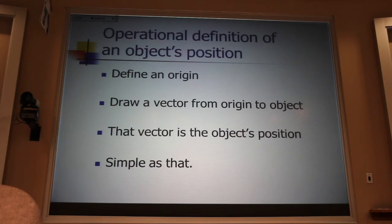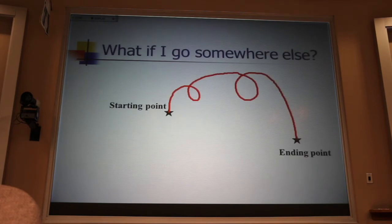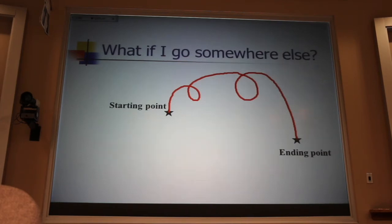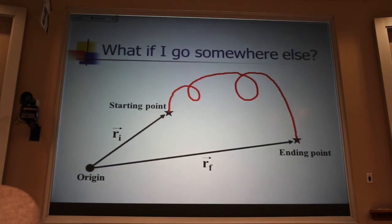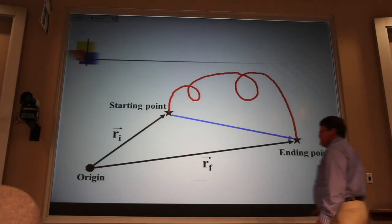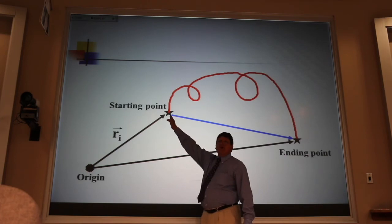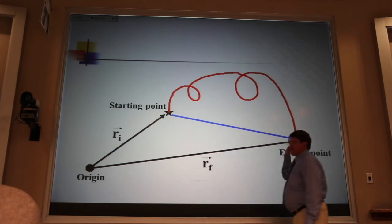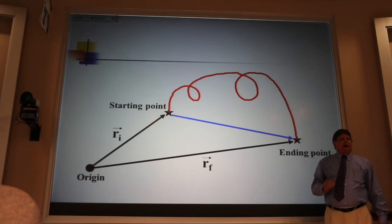Now, what if I go someplace else? Well, to define that going someplace else, we can start with our operational definition of position. And we can define an origin. From that origin, we can define an initial position and a final position. What we're looking to talk about is this vector here. The vector that goes from the starting position to the ending position as the crow flies.